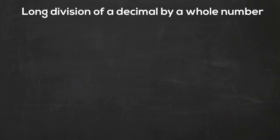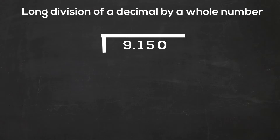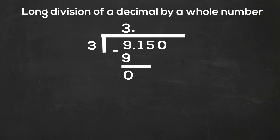Let's look at the first problem. We have 9.150 divided by 3. The first thing we need to do is move the decimal point up. Now 3 will go into 9 three times. 3 times 9 is 9.